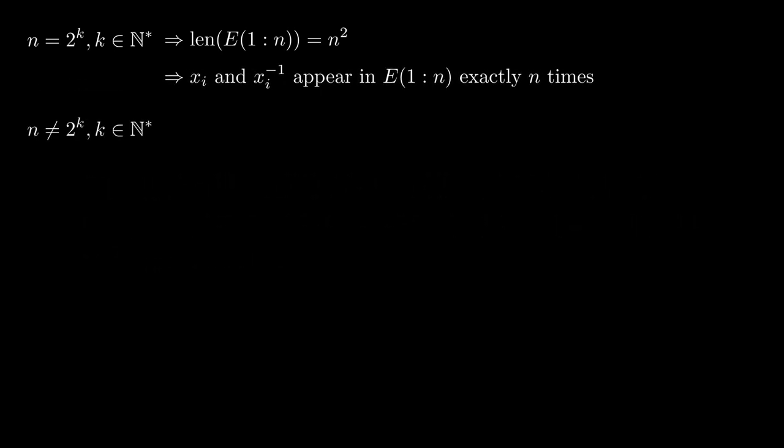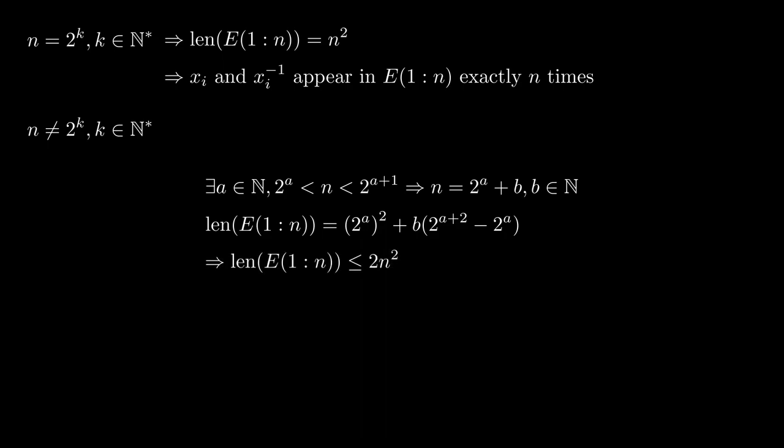If n is not a power of 2, then there is a number a such that n is between 2 to a and 2 to a plus 1. It means that n can be written as 2 to a plus b. Of course, b is less than 2 to a. In Neil Sloan's encyclopedia, it was found a formula for the length of e from 1 through n, which we will take for granted. It is not difficult to show that the length is less than or equal to 2n squared. See if you can prove this last inequality by yourself.